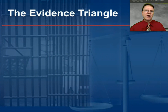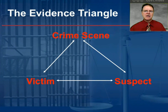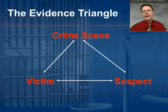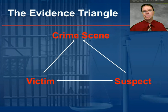Now, the evidence triangle. Much of what we do in forensic science is to make a connection in this triangle between the victim, the suspect, and the crime scene. In other words, can we place the suspect at a crime scene? Can we also place the victim at the crime scene with the physical evidence that's there? So much of our time is spent establishing this triangle. It's also true that there are certain types of crimes that are victimless—there's no identifiable victim to a particular crime.